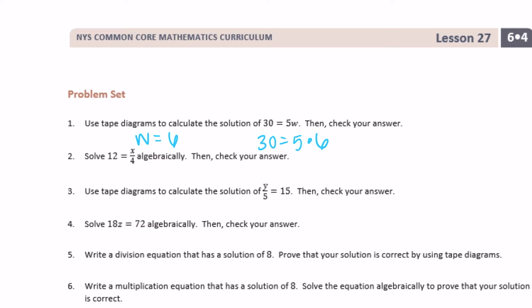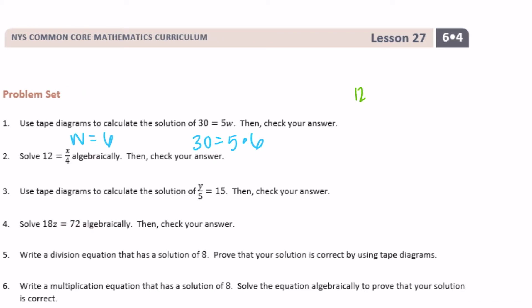Number 2, solve 12 equals x over 4, x divided by 4 algebraically. So 12 is equal to x over 4, x divided by 4. We want to get x by itself. Right now we're doing x divided by 4. To get rid of the divided by 4, we can cancel it out by multiplying by 4. So we can do x divided by 4 times 4, and what we do on one side we must do on the other side, 12 times 4. So 12 times 4 is 48. And then these two cancel each other out, divided by 4 and times 4. So 48 is equal to x.